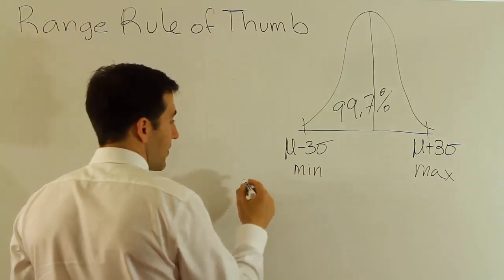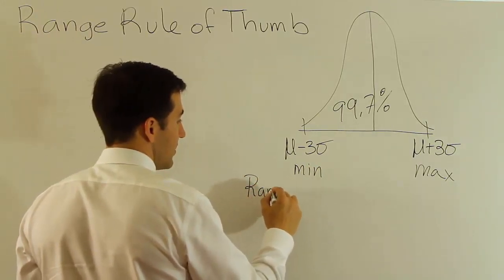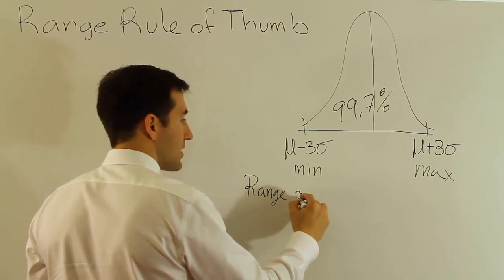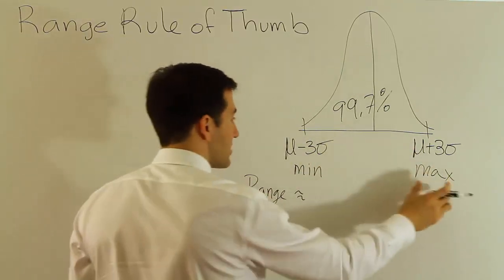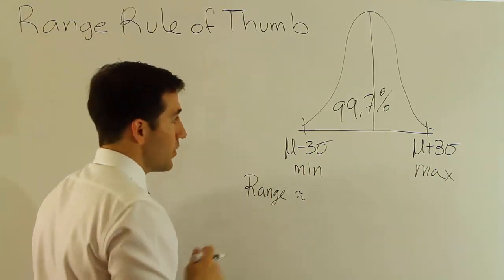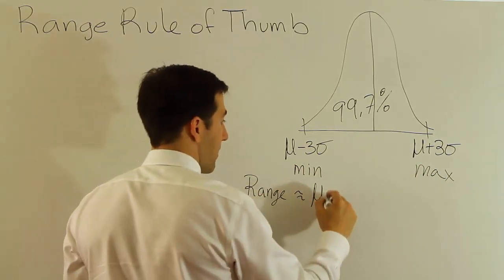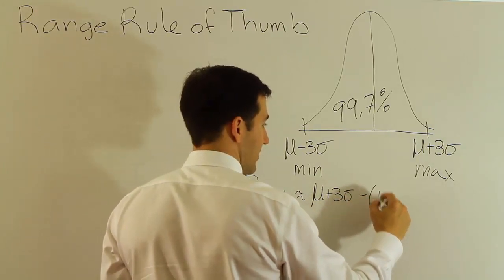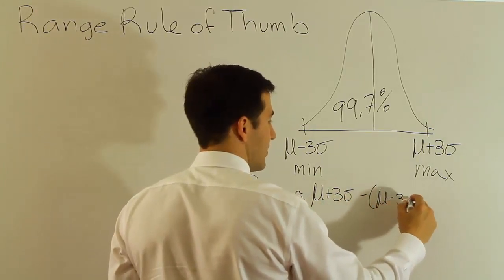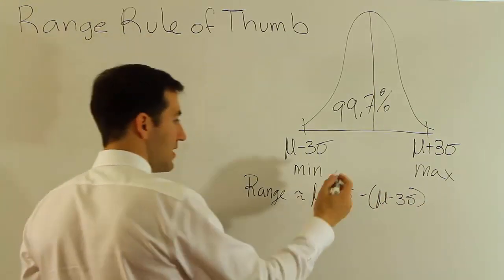then couldn't we say that the range is approximately this number minus this number? Because max minus min is the range by definition. So maybe I could do the mean plus three standard deviations minus parentheses the mean minus three standard deviations. And if I did that, what would I get?